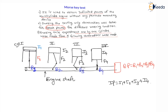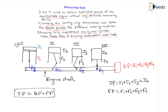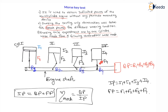Total frictional power loss FP is nothing but F1 + F2 + F3 + F4. Therefore, total indicated power produced by all cylinders is nothing but brake power plus frictional power loss: total IP = BP + FP. Mechanical efficiency is the ratio of output to input, that is brake power divided by indicated power.